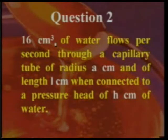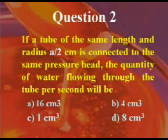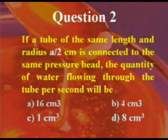Question number two: 16 centimeter cube of water flows per second through a capillary tube of radius 'a' centimeter and length 'l' centimeter when connected to a pressure head of 'h' centimeter of water. If a tube of the same length but radius a/2 centimeter is connected to the same pressure head, the quantity of water flowing per second will be: A) 16 cm³, B) 4 cm³, C) 1 cm³, or D) 8 cm³.